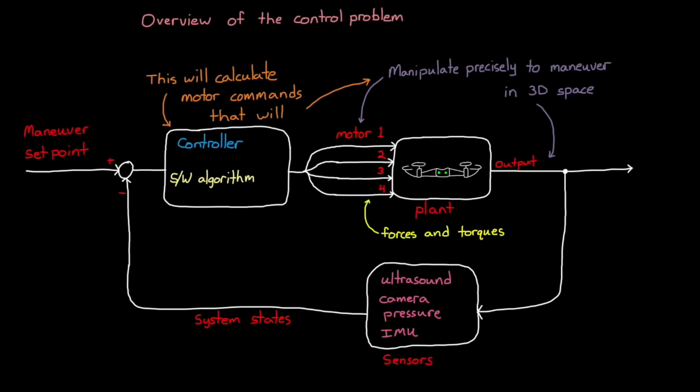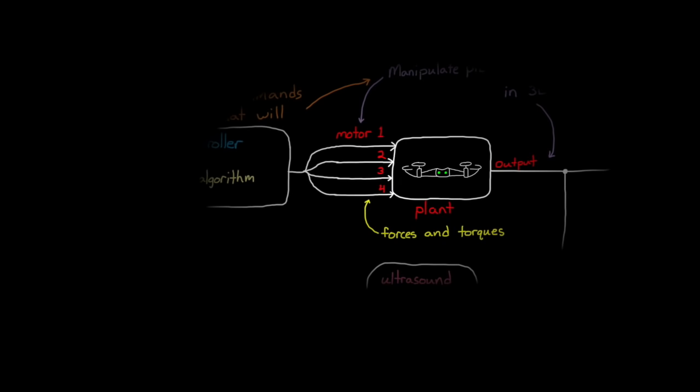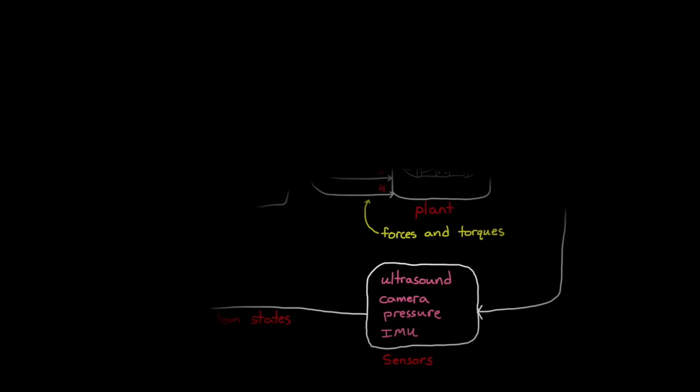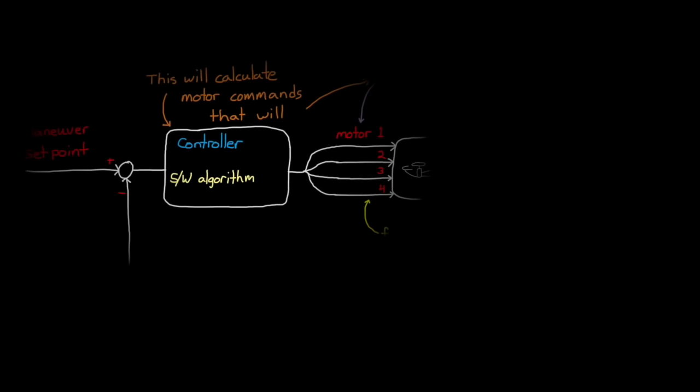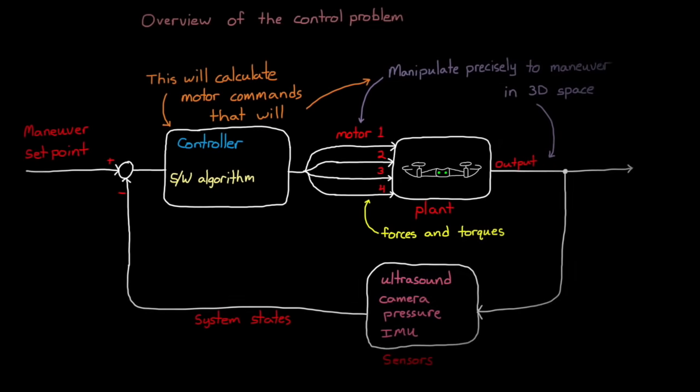So we know that manipulating the four motors in specific ways will allow us to control the drone in 3D space. And we have a set of sensors that we can use to estimate the state of the system. And we have an onboard processor that can run our control logic. The control system development will ultimately be done in Simulink, where we're going to build and simulate the quadcopter model, tune the controller, test it in a closed loop simulation, and then finally, automatically generate flight code that we're going to load into the onboard microcontroller on the Parrot mini drone. But the very next step is to figure out how we want to set up the control system architecture, and we're going to talk about that in the next video.